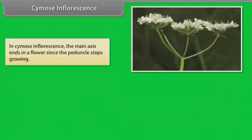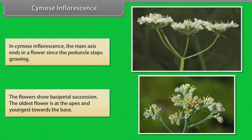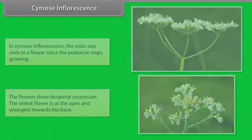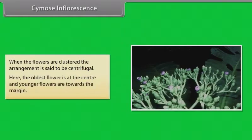In cymose inflorescence, the main axis ends in a flower since the peduncle stops growing. The flowers show basipetal succession; the oldest flower is at the apex and the youngest towards the base. When the flowers are clustered, the arrangement is said to be centrifugal, where the oldest flower is at the center and younger flowers are towards the margin.